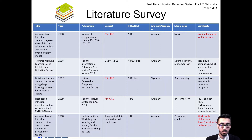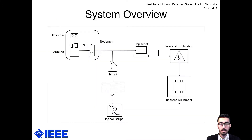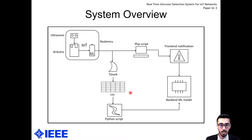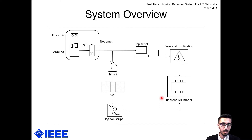We created our own dataset using T-Shark — more on that later. This is the system we came up with. It consists of an IoT node which sends distance data to a PHP script on an Apache server, which is then displayed with animations on the front end. While all of this is happening, T-Shark monitors the network and gets traffic data into a CSV file. A Python script taps into that CSV file and sends this data to the backend, where it is passed to the machine learning model — random forest — which decides whether the data is an attack or normal. If it is an attack, it sends a notification to the front end.